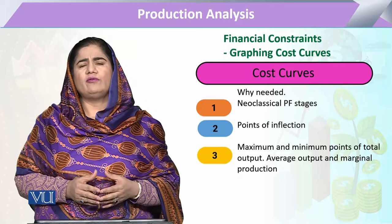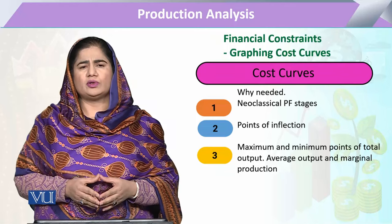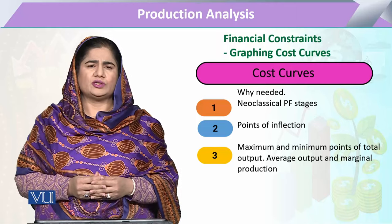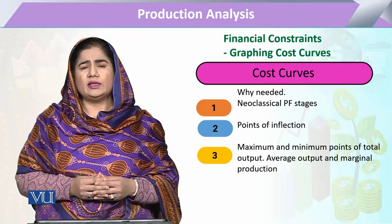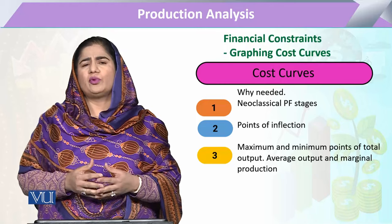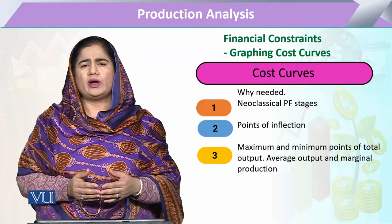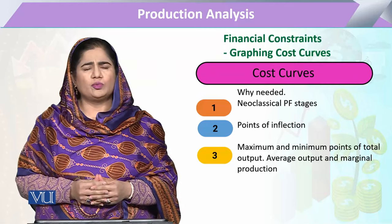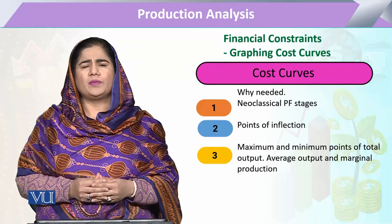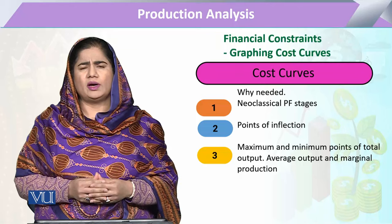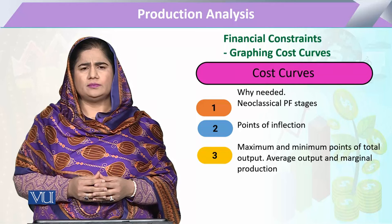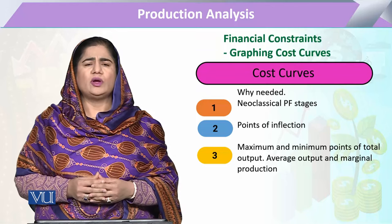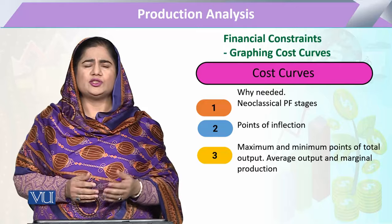Therefore, when we have to decide about the production process, we also have to decide about the related costs. Likewise in production, we have certain points of inflections. For those points of inflection in the production function, what will be their reciprocating points on the cost curve? There are certain maximum and minimum points in total output, in variable output, and in marginal production. The shape of these curves also requires that the entrepreneur or producer should have knowledge related to the reciprocating cost curves.